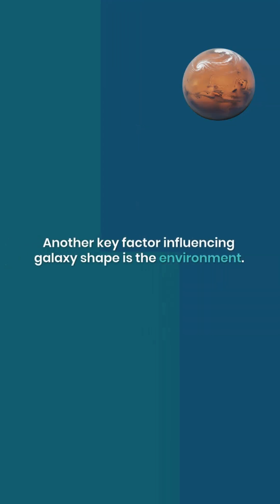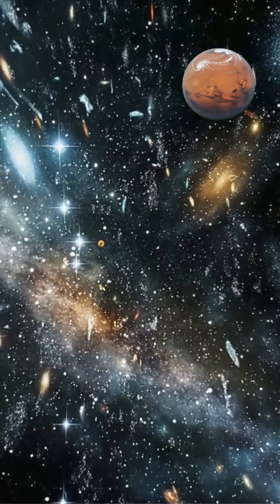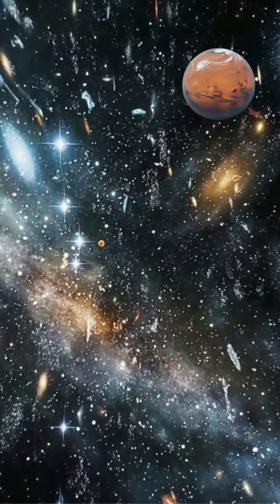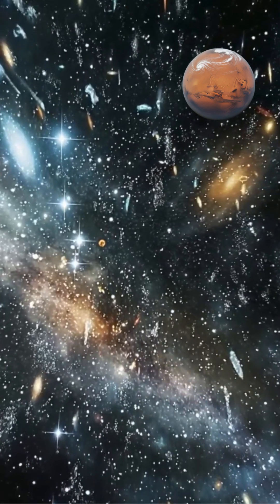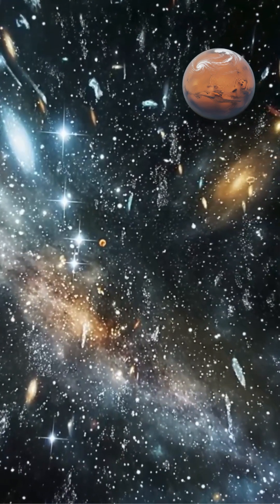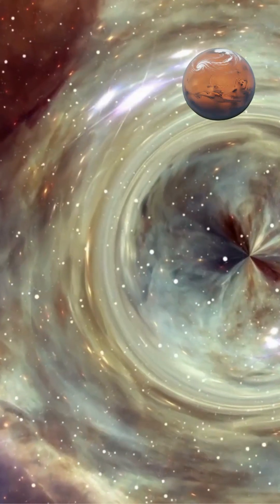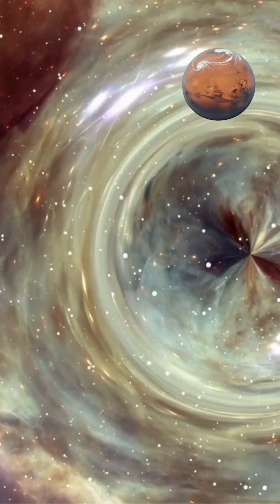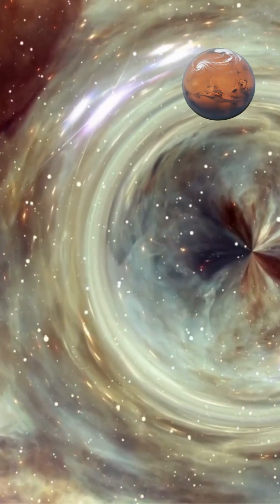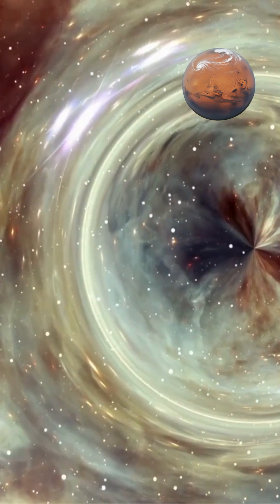Another key factor influencing galaxy shape is the environment. Galaxies in dense clusters often experience frequent interactions and mergers, leading to more elliptical forms. In contrast, isolated galaxies are more likely to maintain their spiral structure over billions of years.